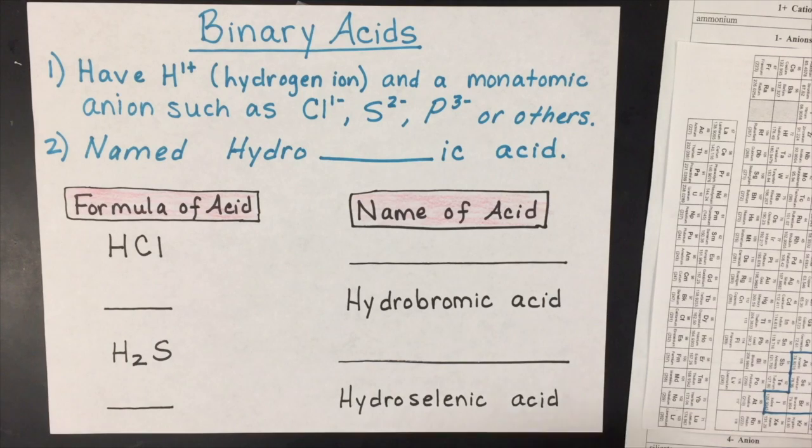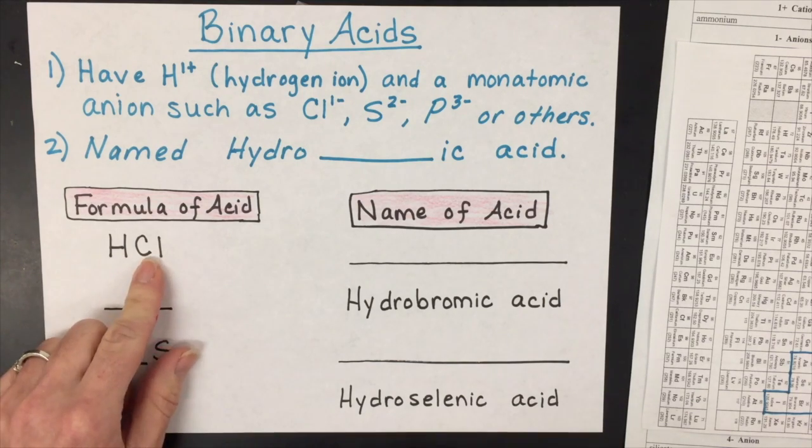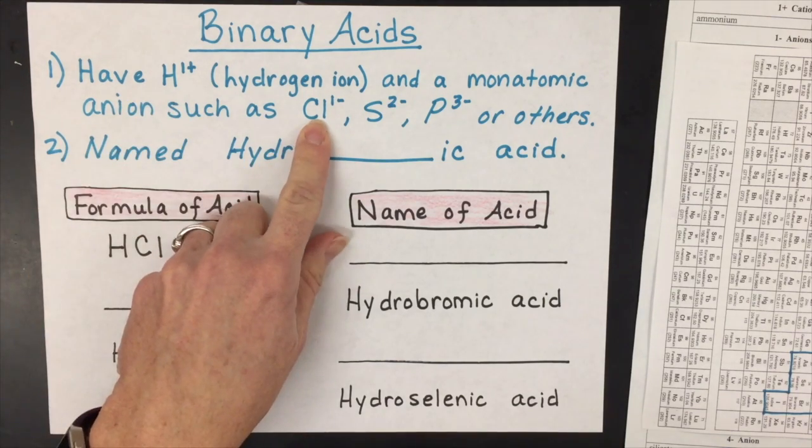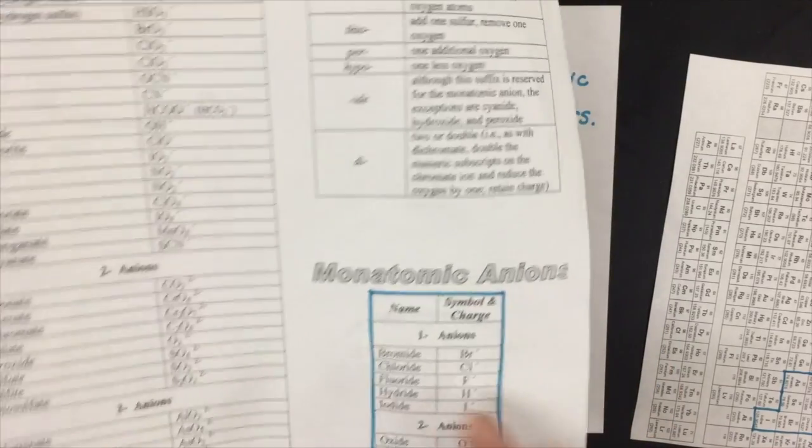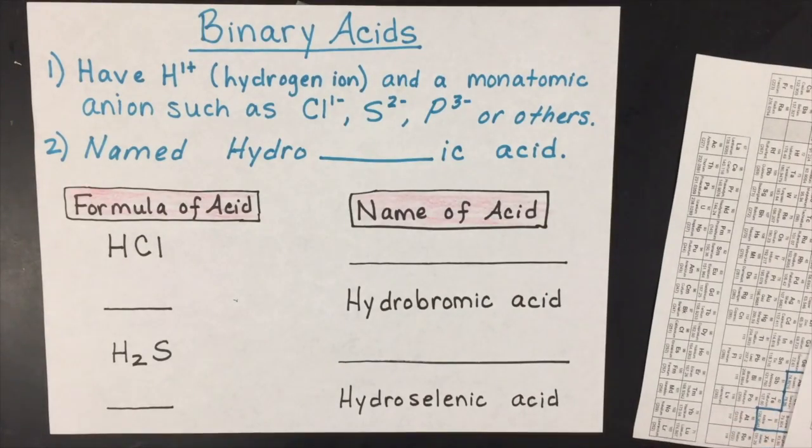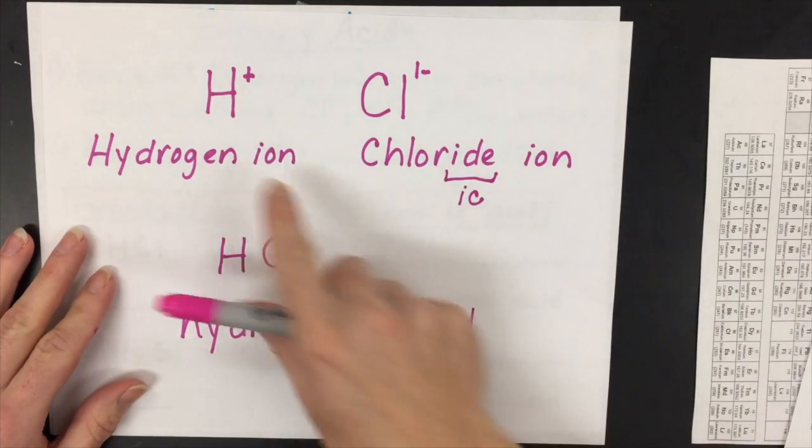We're going to do a couple practice problems. If you have HCl, it's made of the hydrogen ion and the chloride ion. You're going to take the chloride ion, take its name, and turn the -ide into -ic and then add the word acid.